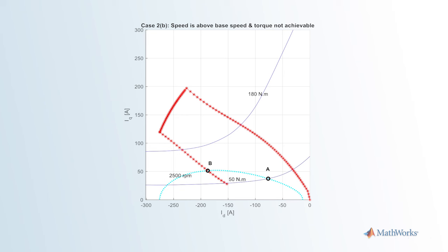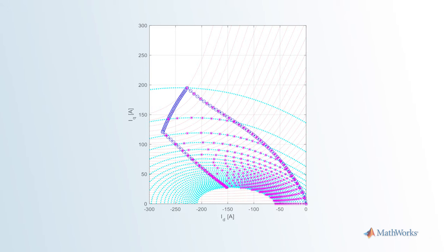In Case 3, speed is above base speed and the torque command is not achievable — the 180 Nm contour does not intersect the speed limit ellipse at all. We still put Point B in the lookup table, as it's the intersection of the speed limit contour and the MTPA line, indicating the maximum achievable torque at this speed. For the 50 Nm torque command, it intersects the speed limit ellipse at Point A, so this torque is achievable. Looking at all torque commands and speed limit contours, this gives us the final flux weakening lookup table points. In industry, this calibration process is automated by scripting in MATLAB or using toolboxes like the Model-Based Calibration Toolbox.